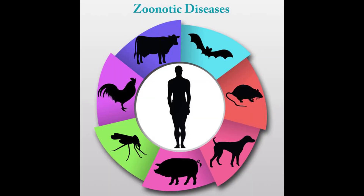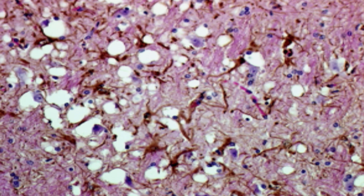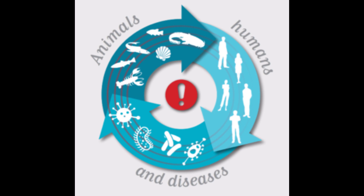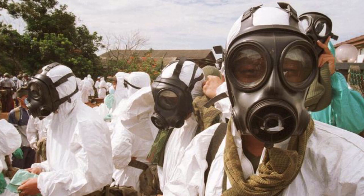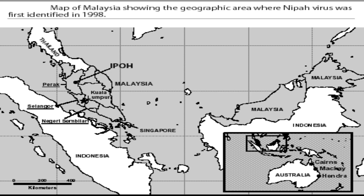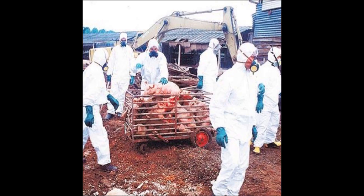Nipah falls under the category of zoonotic diseases like Ebola, HIV, mad cow disease, and rabies, which can spread from animals to humans. Nipah was added to the list of zoonotic diseases in 1998 when there was an outbreak of an unknown illness in the Malaysian village of Sungai Nipah. Hence the disease Nipah got its name from the village it first broke into.